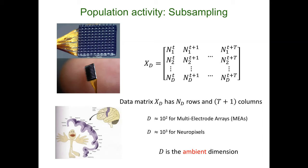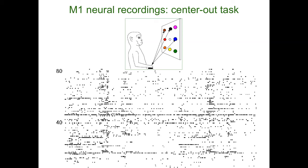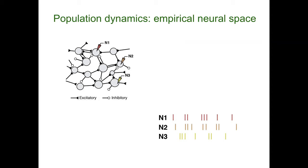This number D could be on the order of a hundred for multi-electrode arrays, or a thousand to 10,000 if using calcium imaging. But it's still a very heavy subsampling of the neural space of interest, which would be of dimension 10 to the 6. D is the ambient dimension — the dimensionality of the empirical neural space that includes all neurons we're actually able to record from. In our center-out task recordings, the ambient dimensionality was 80.